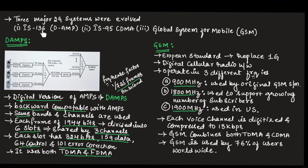There are 3 major 2G systems that evolved. The first one is IS-136, which is DAMPS — Digital AMPS. The second one is IS-95, which is CDMA. The third one is Global System for Mobile, which is GSM. We have already discussed CDMA in our previous videos, so let us first understand DAMPS.